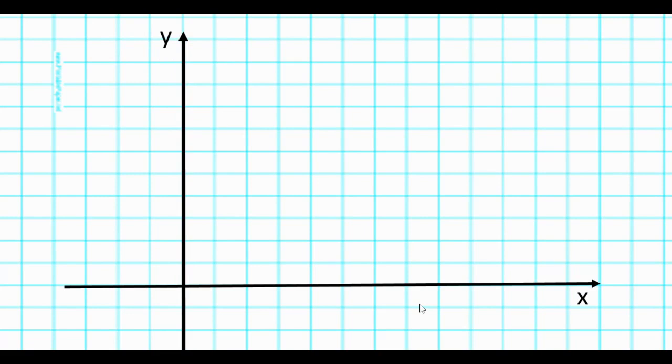Let's plot the graph. Our first thing is to draw the axes. Then choose an appropriate scale and apply on the axes. Then we plot the points. Our first one is negative 1, 10. Next one is 0, 4.